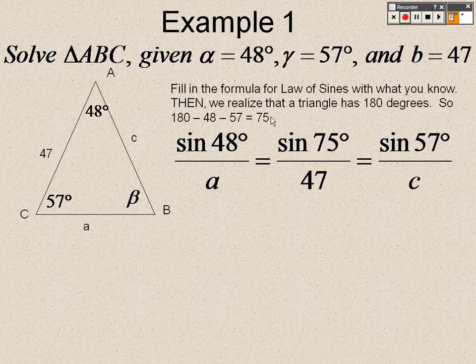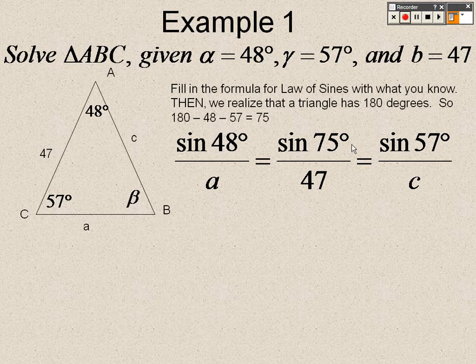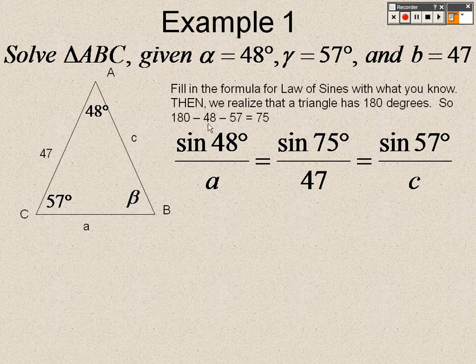So that's why I got 75 degrees for B. So keep that in mind, that's why I have 75 degrees in there, now for B instead of beta. Because I did 180 minus 48 minus 57, that's 75 degrees. So now, according to our formula, it's sine of alpha over A equals sine of beta over B, which equals sine of gamma over C.